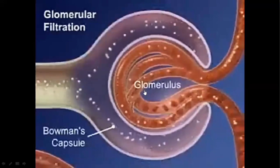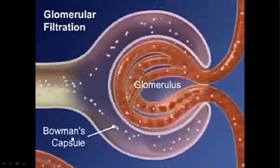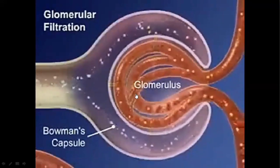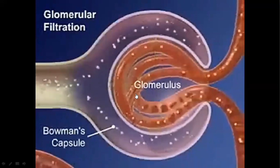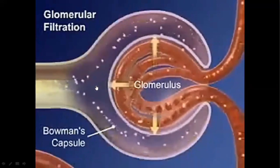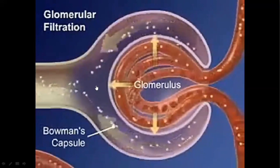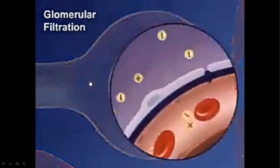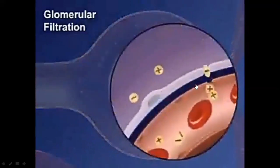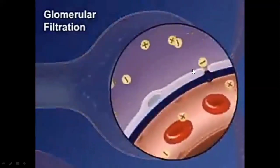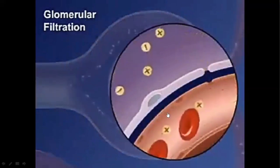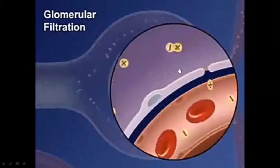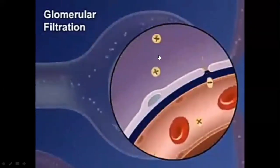The renal corpuscle is composed of two structures: the glomerulus and Bowman's capsule. Blood entering the glomerulus is filtered — the plasma and soluble substances enter Bowman's capsule where they form the filtrate. The blood filtered out contains all small soluble substances and plasma, while the cell components are left behind.